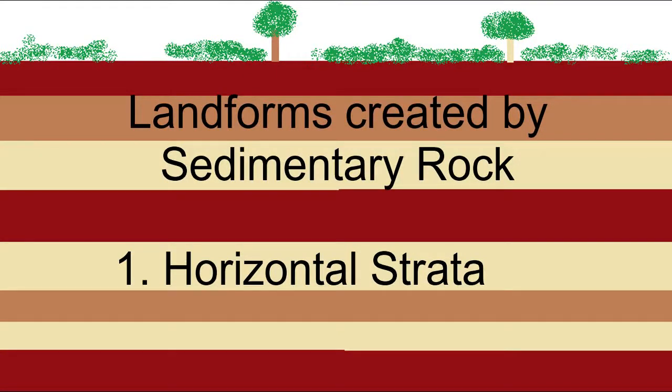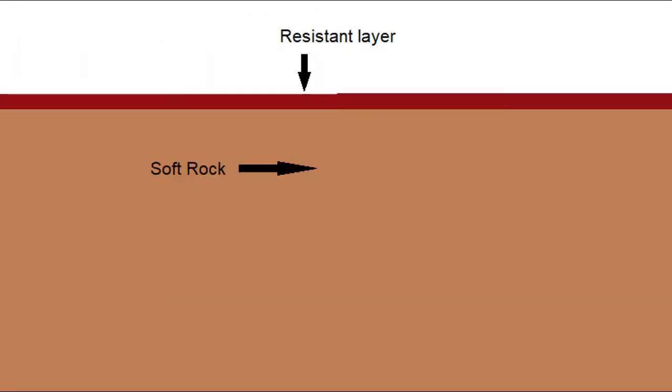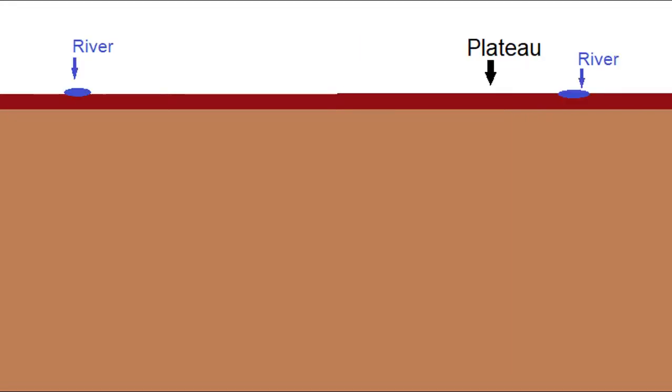What we're going to look at first is the landforms formed by horizontal strata. That's when the lines are running parallel to each other with the different types of sediment. For the image we're going to look at, we're particularly interested in what happens when there is a layer of more resistant rock on top of a layer of less resistant rock.